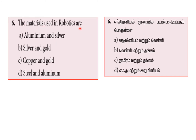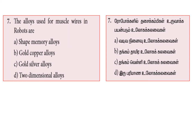The materials used in robotics: what type of material is used? Steel and aluminum are used in robotics. Option D, steel and aluminum, is the correct answer.